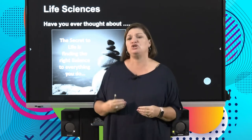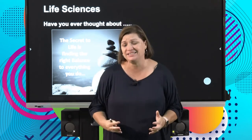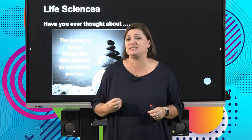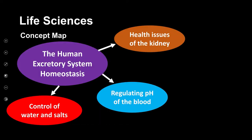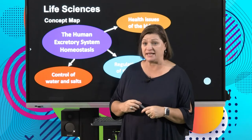You've looked at homeostasis before — how insulin brings about balance when you studied the digestive system, and how oxygen and carbon dioxide are balanced in the gaseous exchange system. Today we're going to look at how the kidneys ensure certain things are balanced: how they control our blood pH, how they control water, and how they control salt.